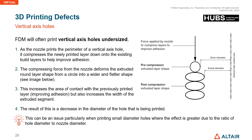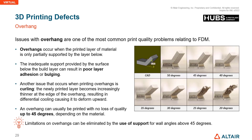This is particularly an issue when printing small-diameter holes, where the effect is greater due to the ratio of hole diameter to nozzle diameter. Overhang issues are one of the most common print quality problems in additive manufacturing. 45 degrees is the most commonly used angle for orienting a part, since at this angle you can achieve acceptable quality without additional supports. At lower angles — 35, 30, 25, and 20 degrees — deformities occur if no supports are added.